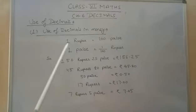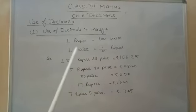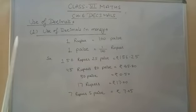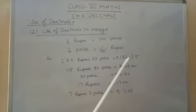We know that 1 rupees is equal to 100 paise. If we convert paise into rupees, then 1 paise is equal to 1 upon 100 rupees. So student, we can write 156 rupees 25 paise, that is 156.25 rupees.